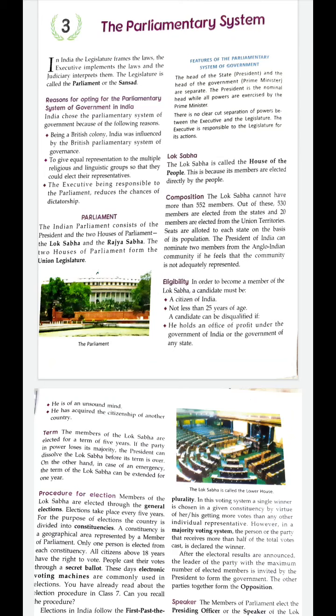The Constitution of India guarantees universal adult franchise — that is, anyone who is 18 years of age has the right to vote, irrespective of their caste, creed, color, sex, or religion. Under parliamentary form of government, people of India directly elect their representatives, and these representatives are accountable to the people.